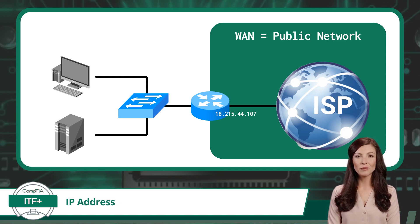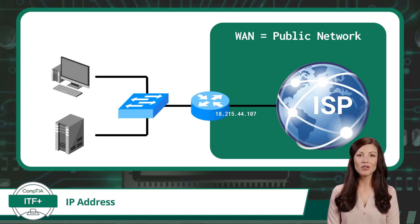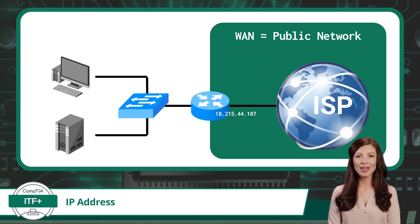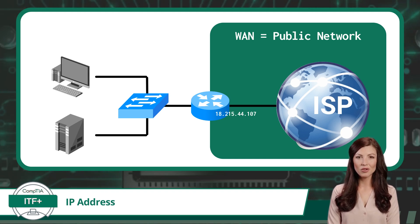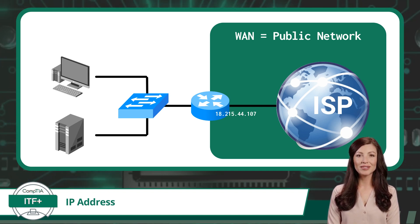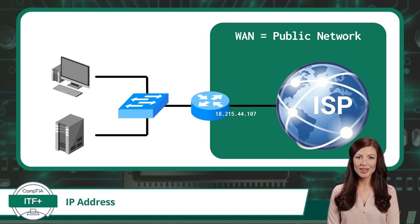This video is worth watching a couple of times. We covered: the definition of an IP address, the different IP protocol versions (IPv4 and IPv6), static and dynamic IP address assignment, and the difference between private and public IP addresses. One last point — don't confuse an IP address with a MAC address. An IP address is a unique identifier for a device's network location, while a MAC address is a unique hardware identifier belonging to a network interface card. An IP address facilitates communication between networks, while a MAC address enables communication within a local area network.